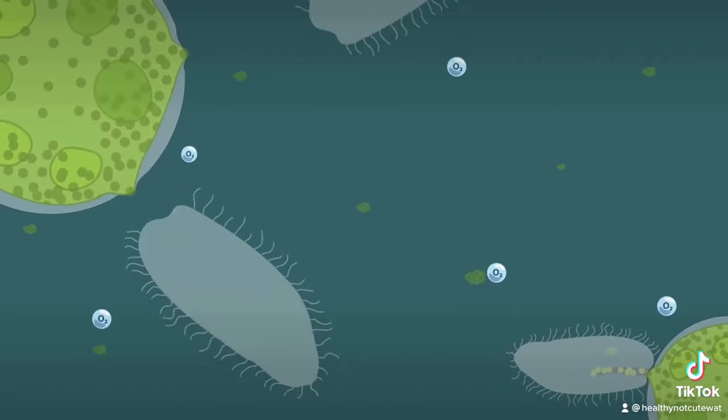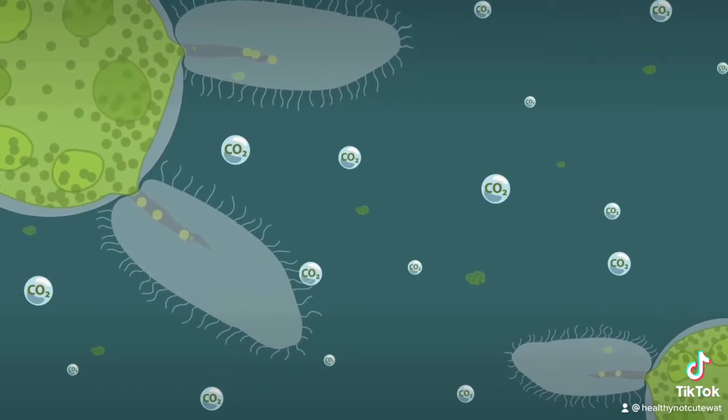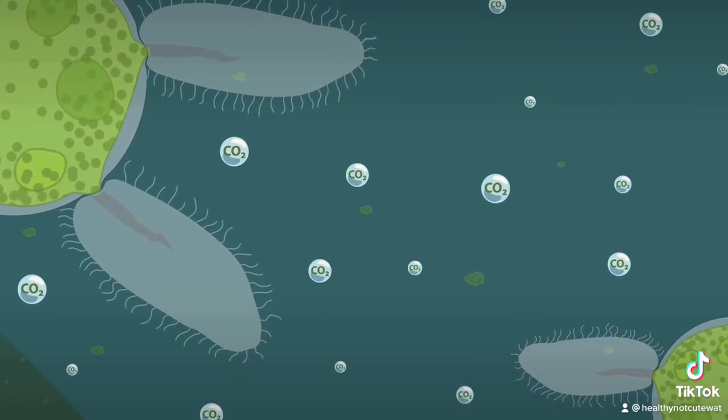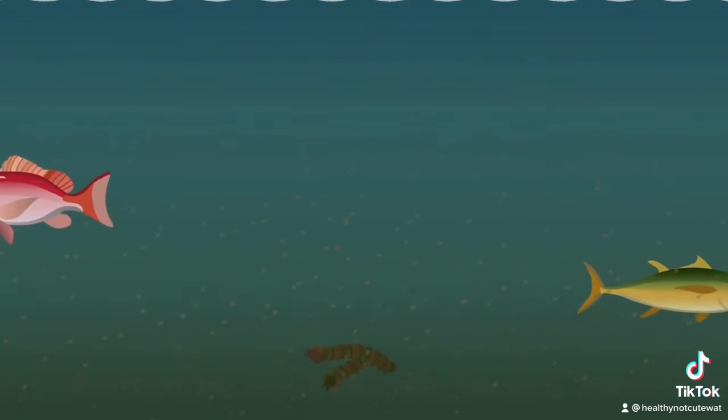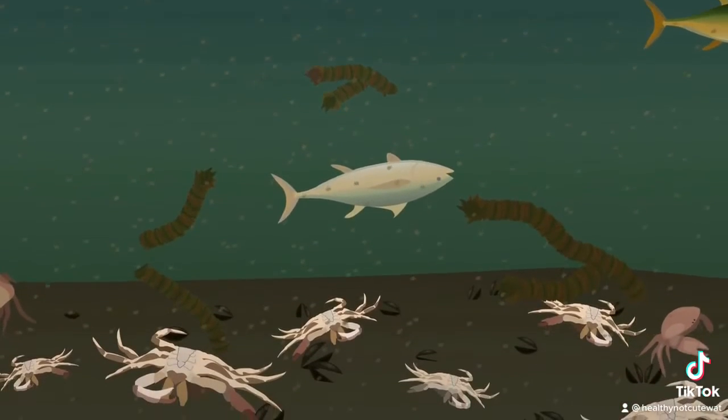Bacteria digest the dead plants, using up remaining oxygen and giving off carbon dioxide. If they can't swim away, fish and other wildlife become unhealthy or die without oxygen.